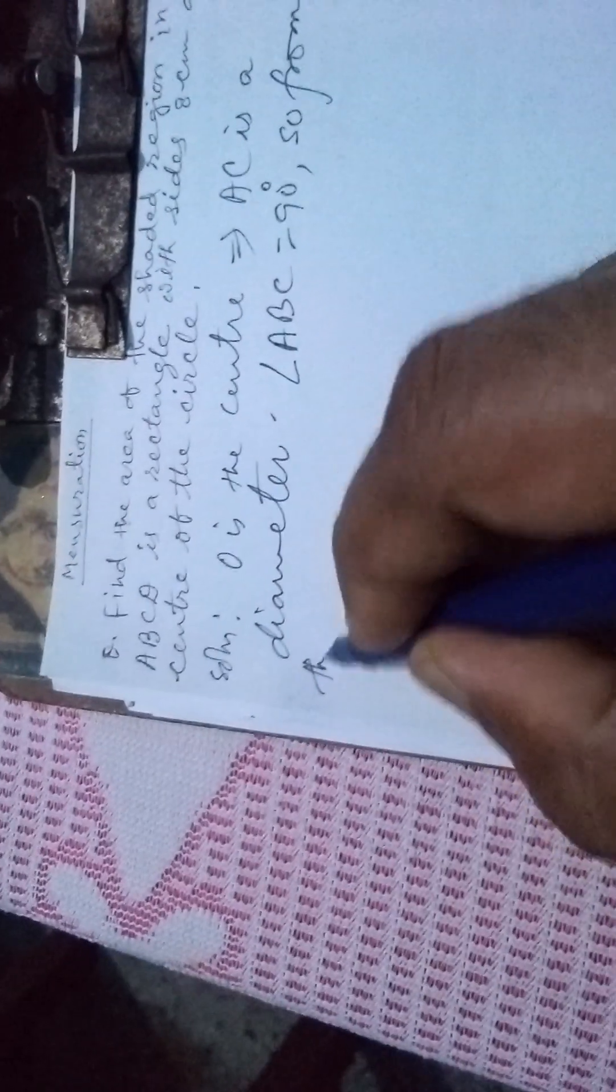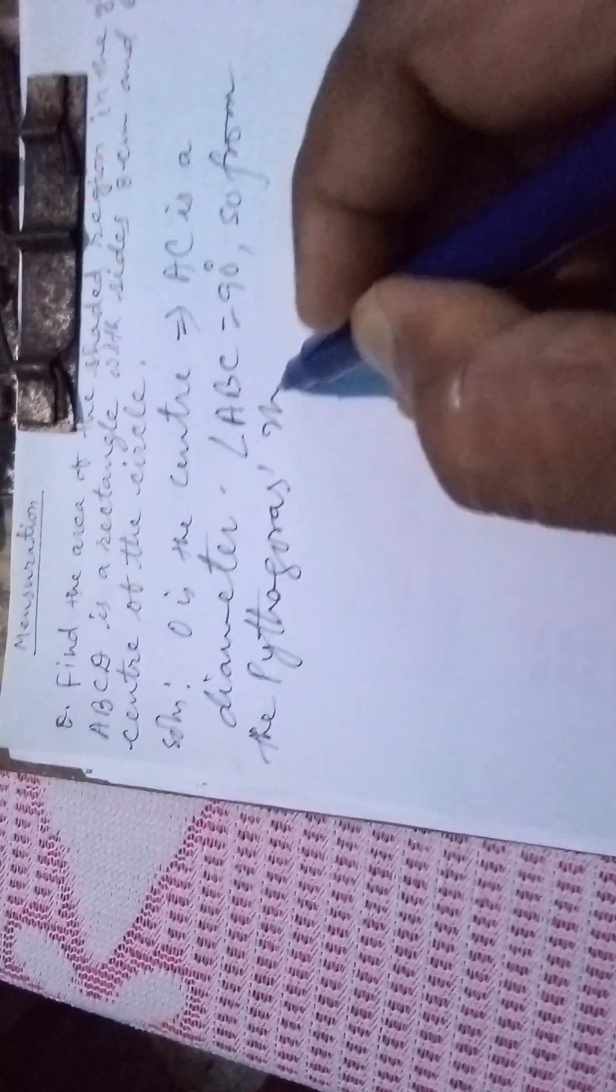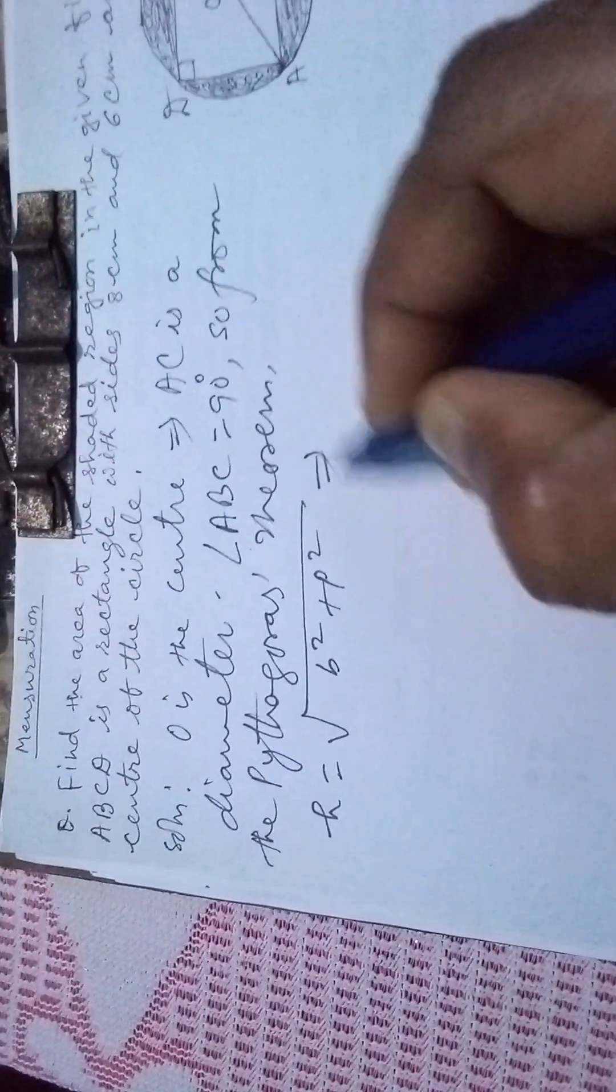From the Pythagorean theorem, we know that hypotenuse equals square root of base square plus height square. This implies AC equals square root of